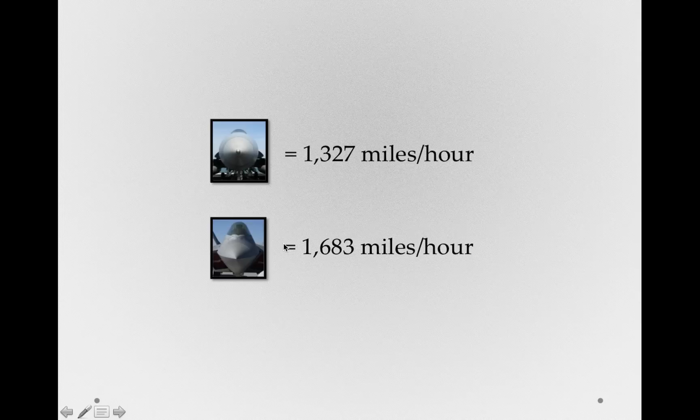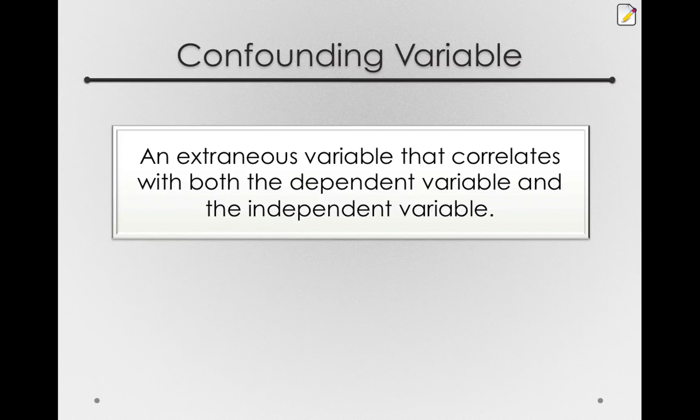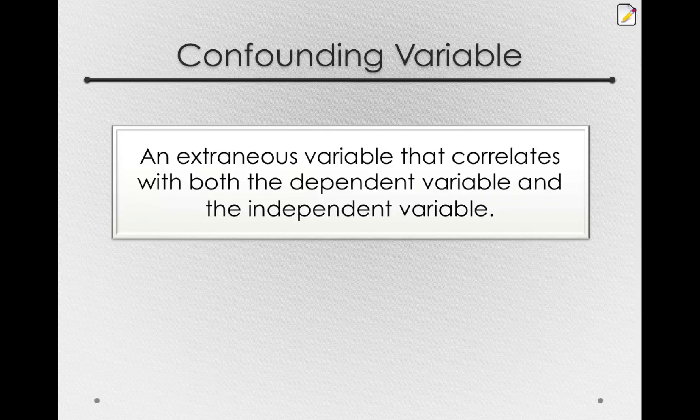Now, each of these different effects or factors that have nothing to do with the nose could be called confounding variables, which are an extraneous variable that correlates with both the dependent variable and the independent variable. Now let's take a second to unpack this. Remember, an extraneous variable is any variable that's not of direct interest to the experimenter, but does have a relationship to the dependent variable, the thing we're measuring.